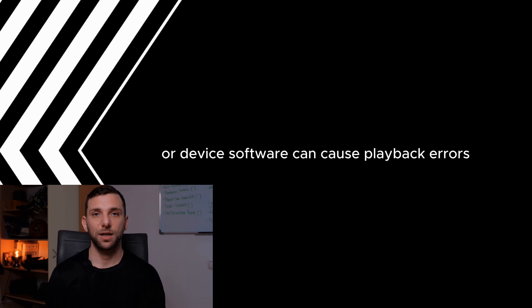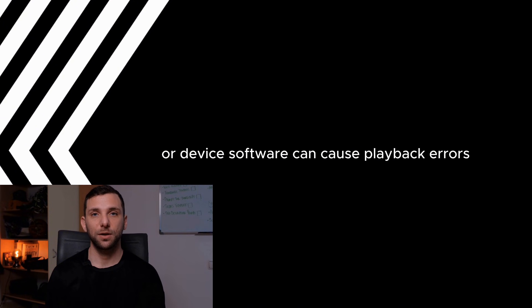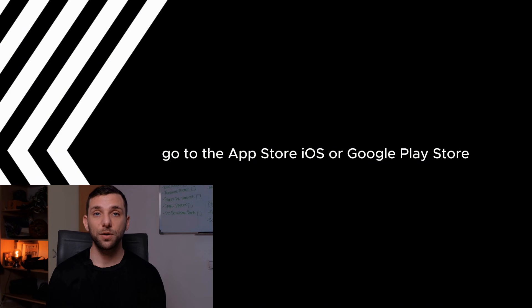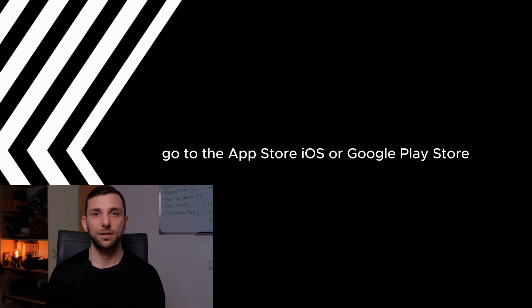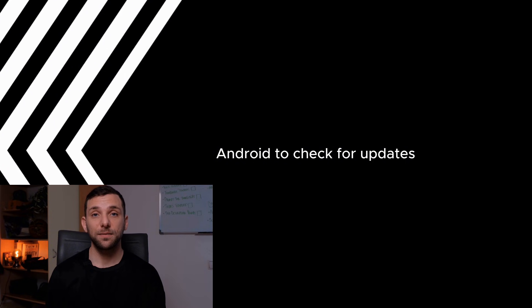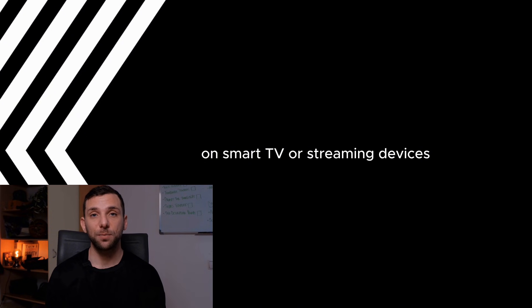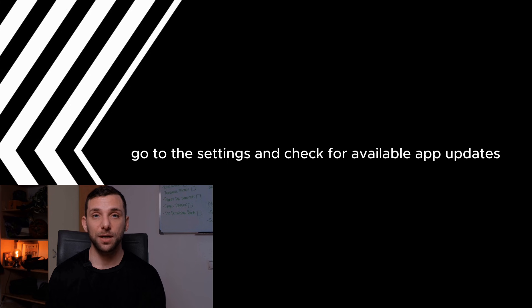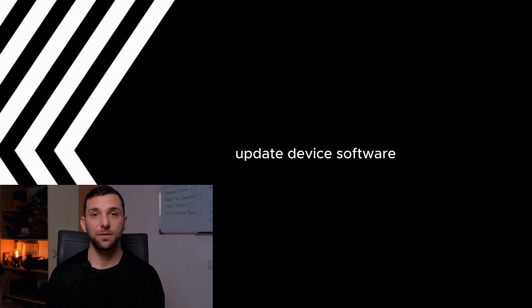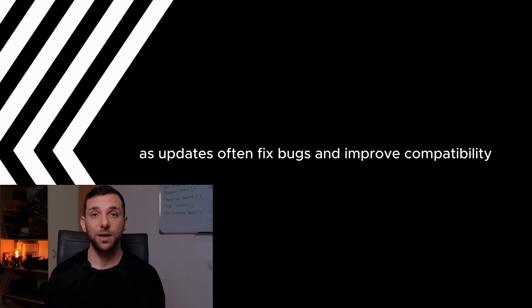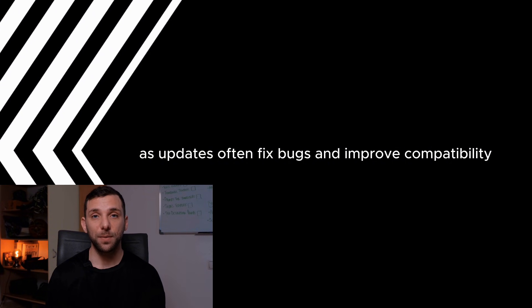Check for updates — outdated app versions or device software can cause playback errors. On mobile, go to the App Store (iOS) or Google Play Store (Android) to check for updates. On smart TV or streaming devices, go to Settings and check for available app updates. Also ensure your device's software is up to date, as updates often fix bugs and improve compatibility.